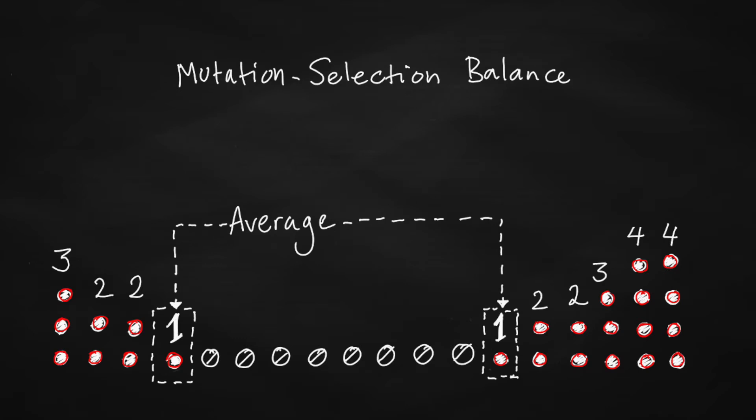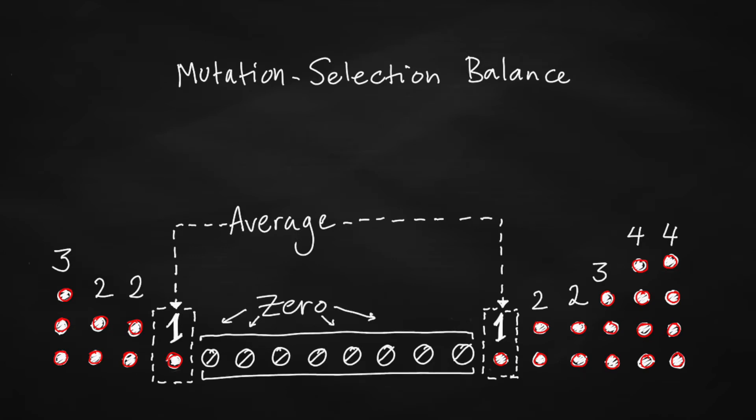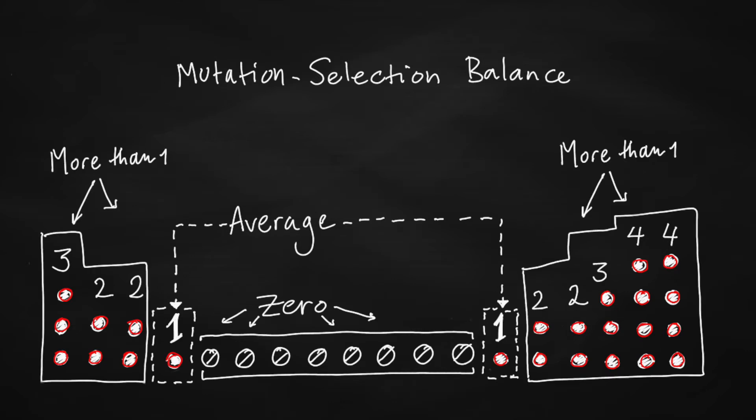In this particular case, the average number of mutants is 1. But you can see that the actual number of mutants is usually not 1 — it is often 0 and sometimes much higher than 1. If the mutation or variant is present, we call it standing genetic variation.